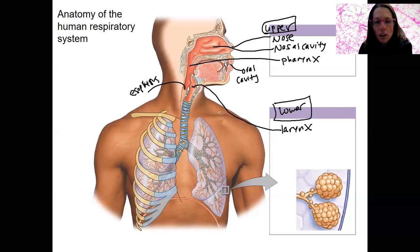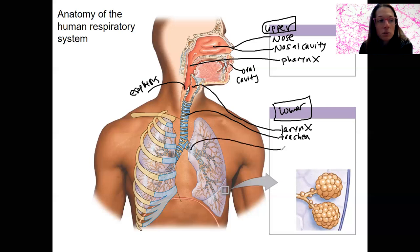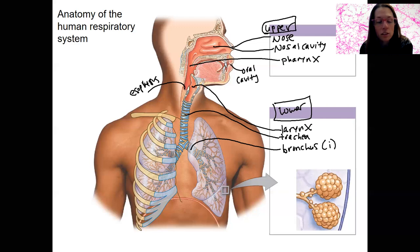Esophagus. This passageway continues and becomes the trachea. You can see there's some different anatomy there with these rings that surround it. And then those passageways continue. We've got one bronchus, two bronchi — these are the first set of divisions that are within the lung itself.